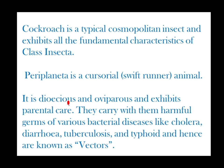It is dioecious, meaning male and female are separate and distinct — unisexual. It is oviparous, meaning an egg-laying organism, and exhibits parental care. They carry harmful germs of various bacterial diseases like cholera, diarrhea, tuberculosis, and typhoid, and hence are known as vectors.